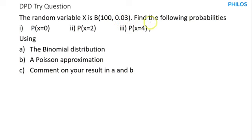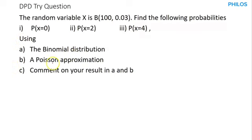The question asks for probabilities: (i) probability that x is exactly 0, (ii) probability that x is exactly 2, and (iii) probability that x is exactly 4. Using A, the binomial distribution; B, a Poisson approximation; and C, comments on your results in A and B.